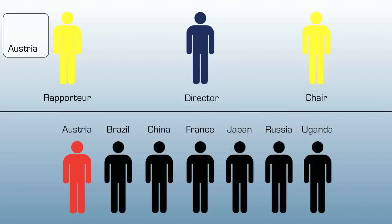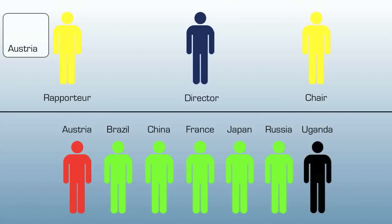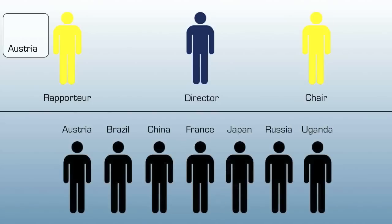The director approved of this motion and therefore it is now being voted upon. Austria is obviously opposed, while the rest of the committee appears to be in favor. This motion clearly passes. We are now in an unmoderated caucus. Delegates are able to walk around freely or leave the room. They may talk to one another for negotiations or have a cup of coffee. After the amount of time specified in the motion has elapsed, we will return to formal session.